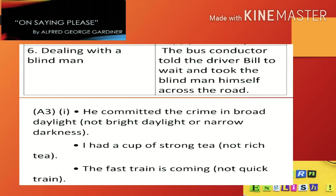Sixth situation, dealing with a blind man: the bus conductor told the driver's bill to wait and took the blind man himself across the road — billing karne wale ko khud bolta tha ki ruk jao, aur jo blind log hote the unko road ke across bhi le jaata tha. Is tarah ka accha bartav us bus conductor ka tha sabhi passengers ke saath.